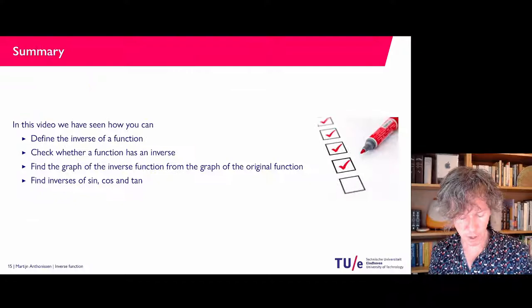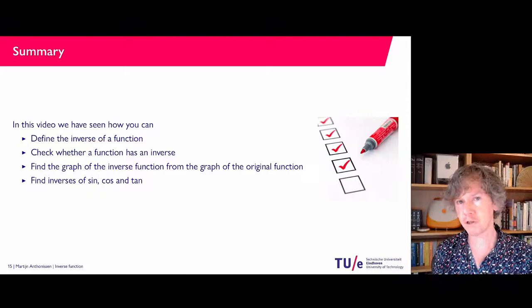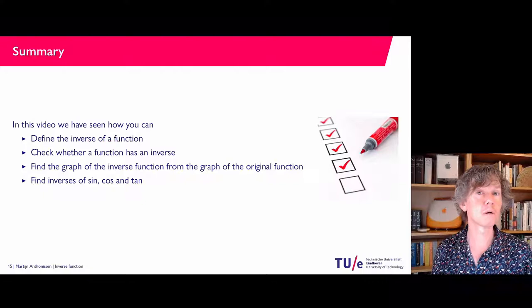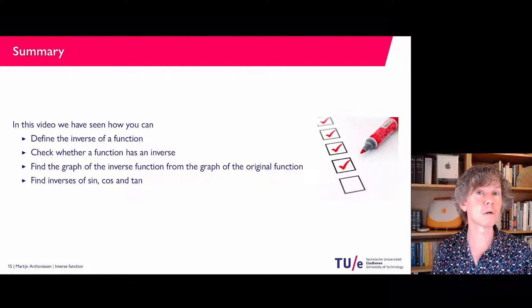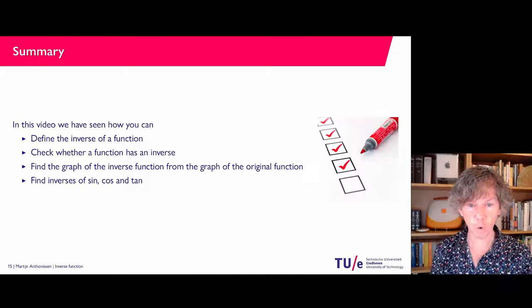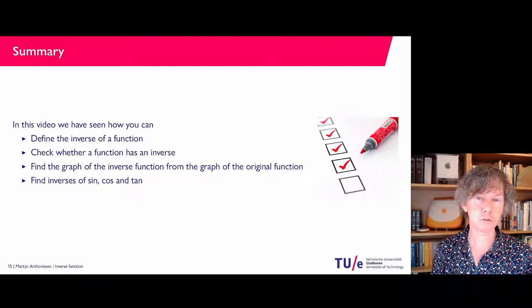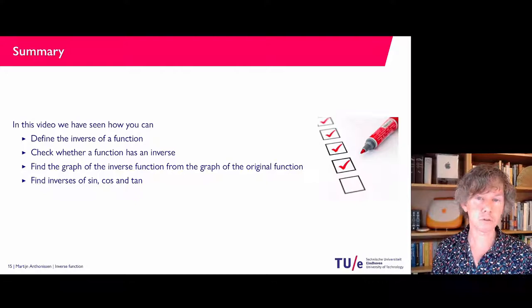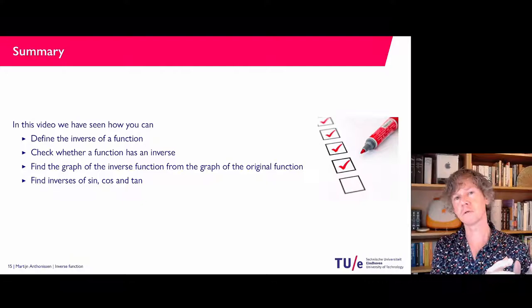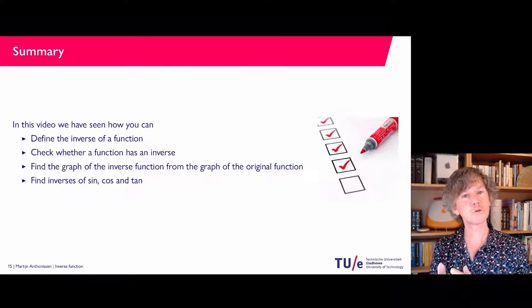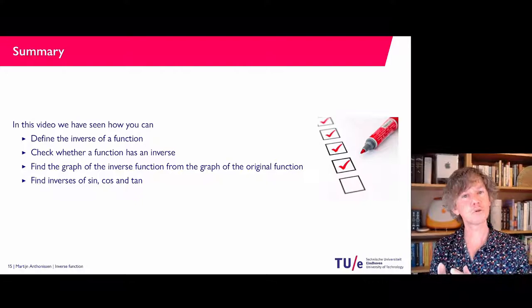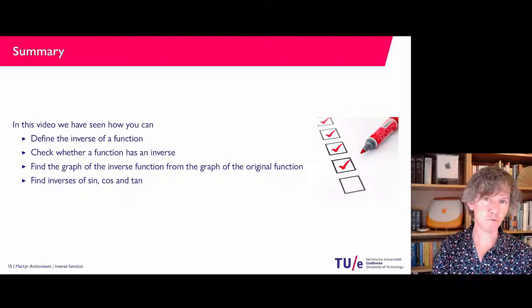That wraps it up for this video. We have looked at the inverse of a function, checked which functions have inverses using the one-to-one criterion, and seen that if a function is not one-to-one on its full domain we can restrict the domain to make it one-to-one on part of it. We saw how to find the graph of the inverse by mirroring in the line y equals x. Finally, we considered the arcsine, arccosine, and arctangent functions. In a future video we will look at derivatives of inverse functions — there is a link between the derivative of the inverse and the derivative of the original function.